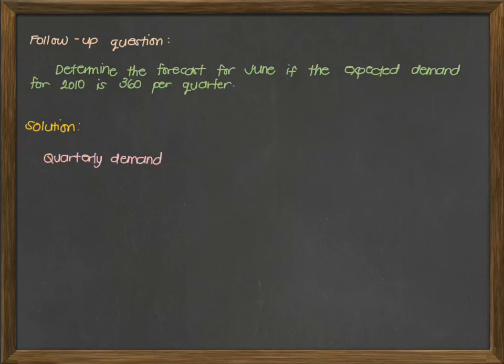Therefore, our solution, the quarterly demand is given as 360 units. The monthly demand is therefore 360 divided by 3. Why 3? Kasi there are 3 months in 1 quarter. Laging tandaan, in 1 quarter, there are 3 months and in 1 year, there are 4 quarters. Minsan dami kasi nako-confuse doon sa values na yun. Again, 3 months in 1 quarter, 4 quarters in 1 year. Using the conversion, this will give us 120 units per month.